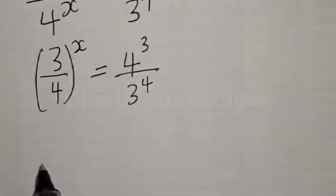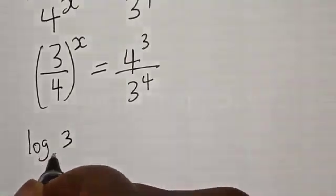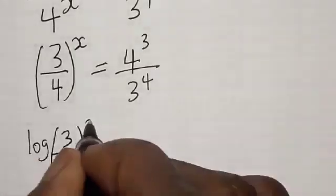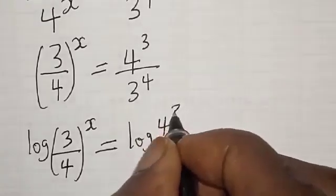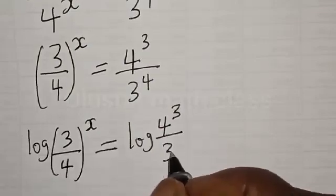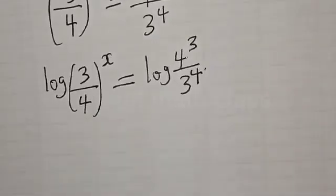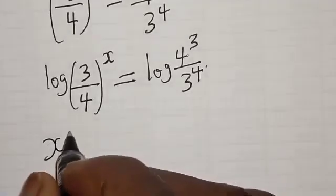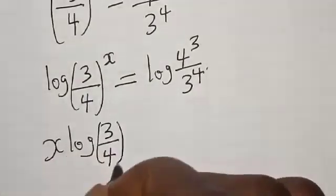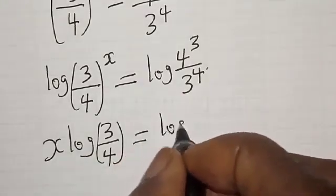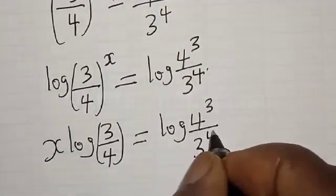Now let's take the log of both sides. We have log of (3 divided by 4) raised to power x is equal to log of (4 raised to power 3 divided by 3 raised to power 4). Now we have x times log(3/4) is equal to log of (4 raised to power 3 divided by 3 raised to power 4).